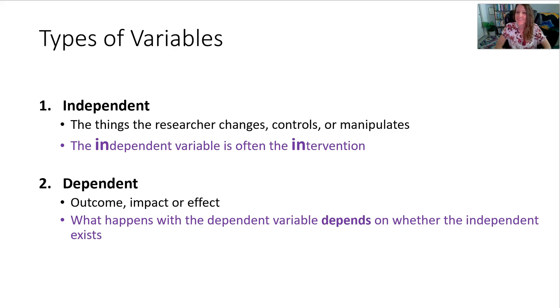The dependent variable depends on whether the independent variable exists — it changes depending on what's going on with the independent variable.